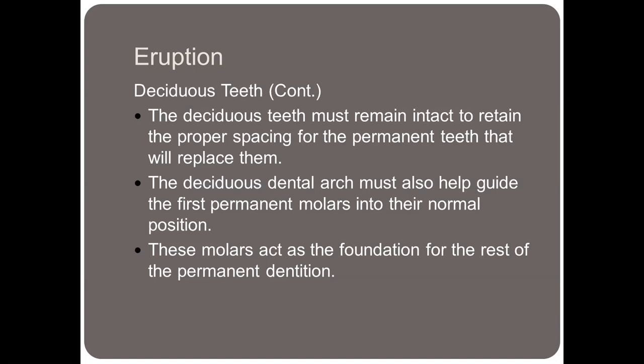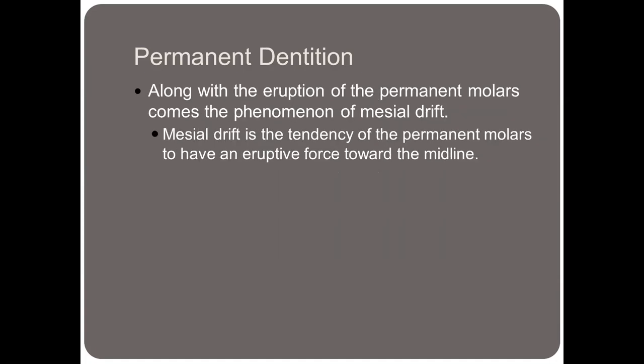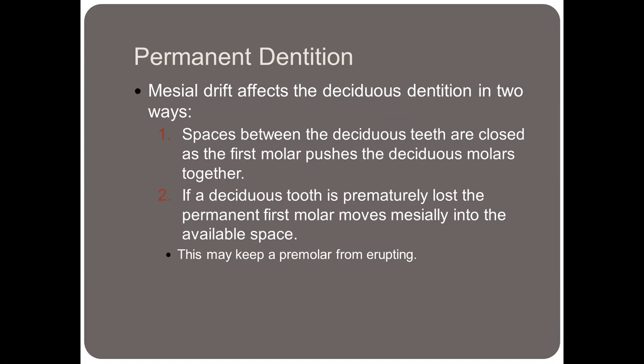The first teeth of the permanent dentition to emerge are usually the mandibular first molars, followed by the maxillary first molars within a few weeks. They emerge immediately distal to the deciduous second molars. Because they don't replace any deciduous teeth, they are not considered succedaneous. They're often called six-year molars because they erupt at approximately six years of age. Along with the eruption of the permanent molars comes the phenomenon of mesial drift — the tendency of the permanent molars to have an eruptive force towards the midline. Mesial drift closes the spaces between deciduous teeth as the first molar pushes the deciduous molars together, and if a deciduous tooth is prematurely lost, the permanent first molar moves mesially into the available space, potentially causing impaction of a premolar.